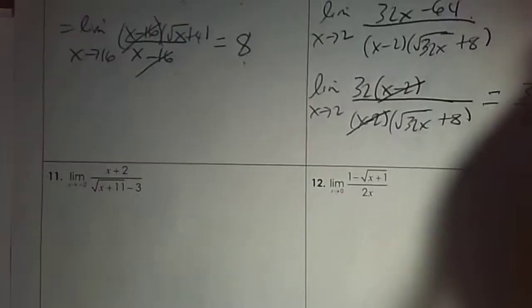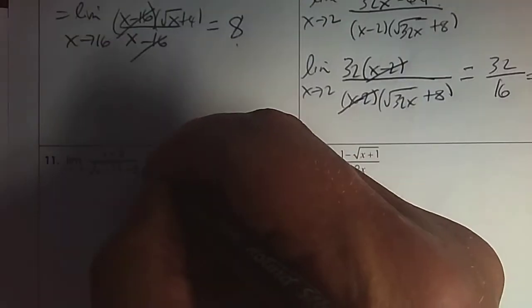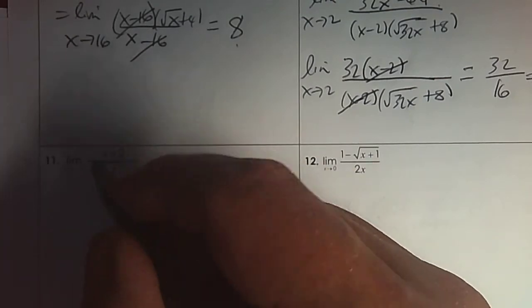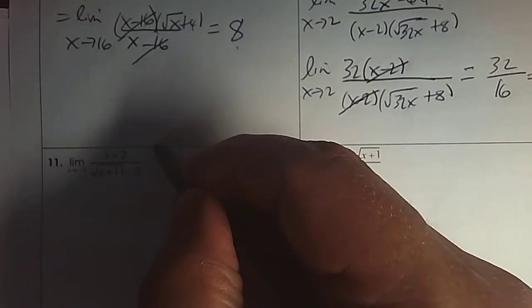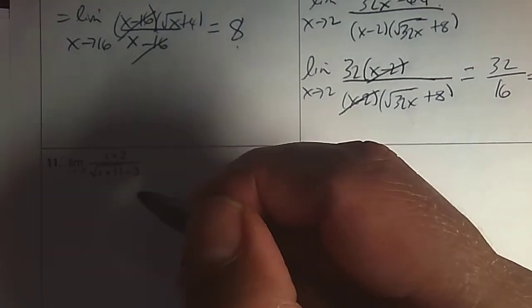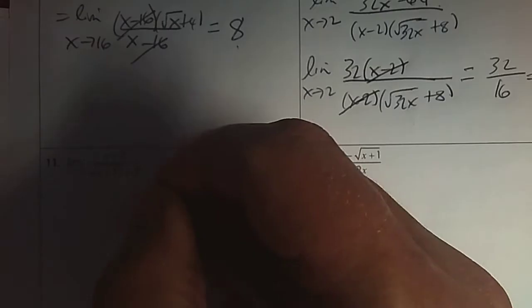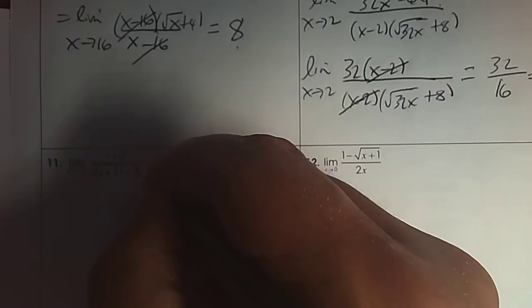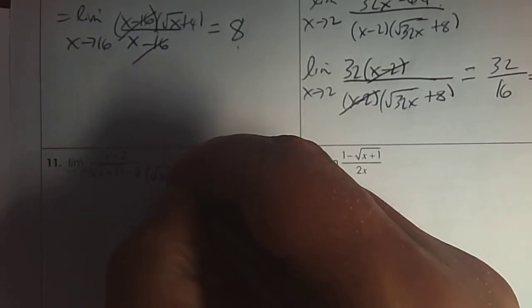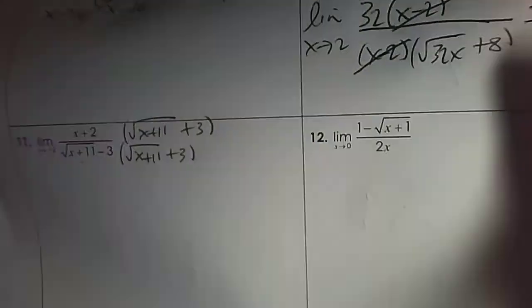Number 11. Can you use the conjugate? Step 1 is plug in negative 2 — it simplifies to 0 over 0. That's what we're looking for — that's called indeterminate. So what technique are we going to use to find the limit? Using the conjugate: that's root x plus 11 plus 3, top and bottom.